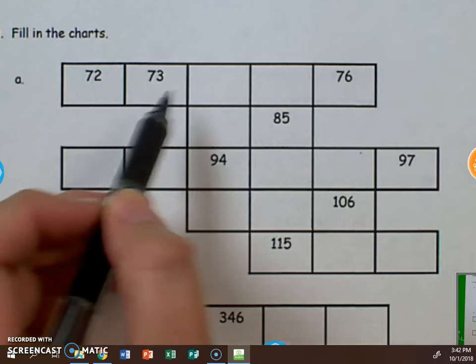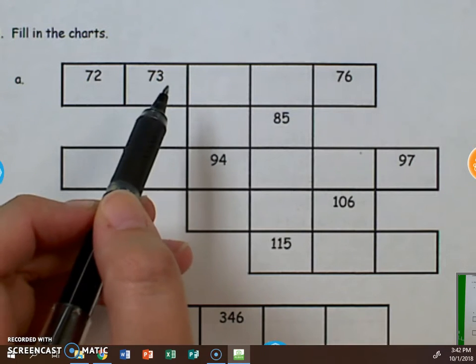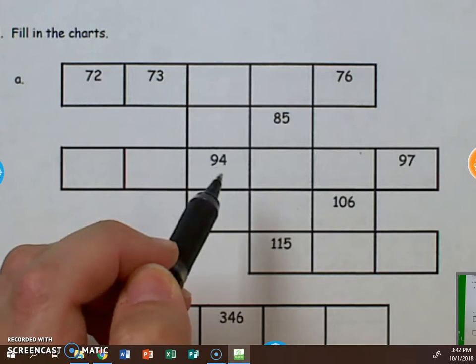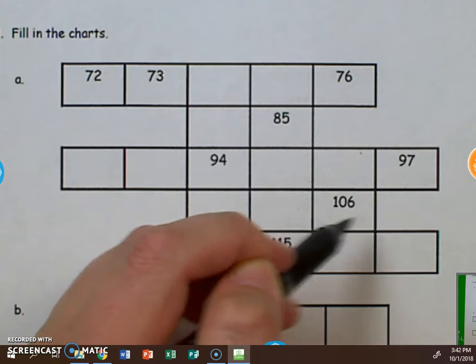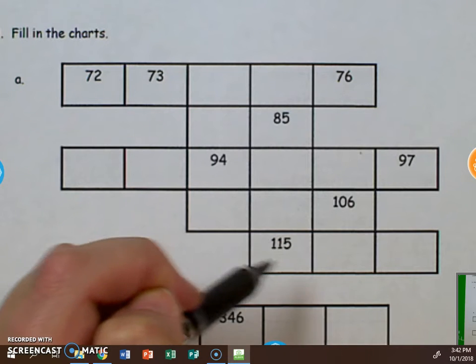We look at the numbers that are given to us. We see that these numbers are in the 70s, 80s, 90s, 100s, and 110s.